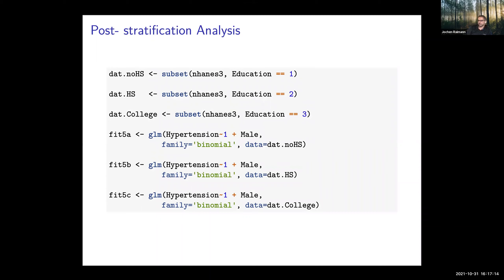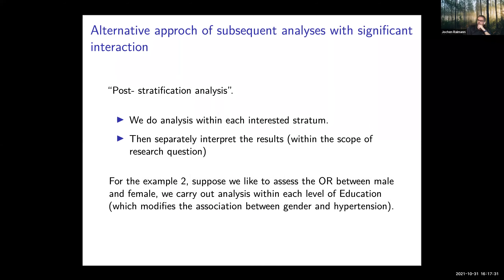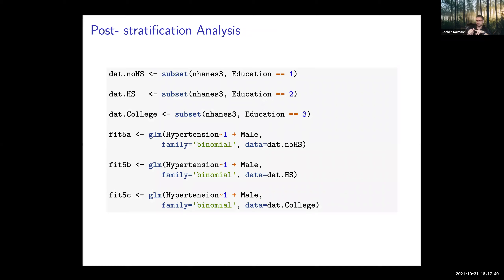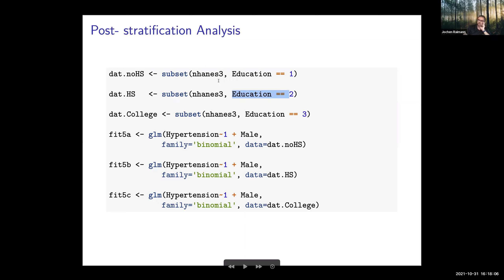To do this we build fit5a, b, and c — three models for each level of education: no high school, high school, and college. Using the subset function, we build three subsets where education equals one (no high school), two (high school), and three (college graduates).